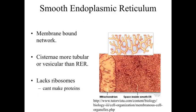If we look at the overall appearance of the smooth endoplasmic reticulum, we can see that the cisternae — the spaces within the smooth ER — are more tubular or vesicular in appearance, rounder in shape, compared to the flattened appearance we saw with the rough endoplasmic reticulum.